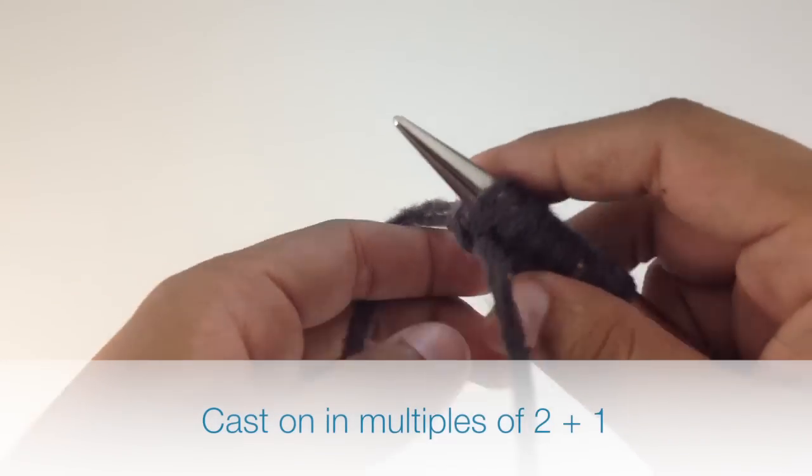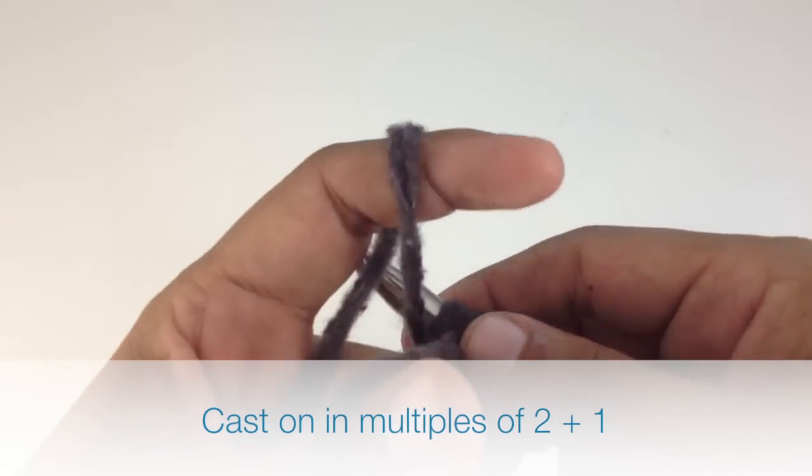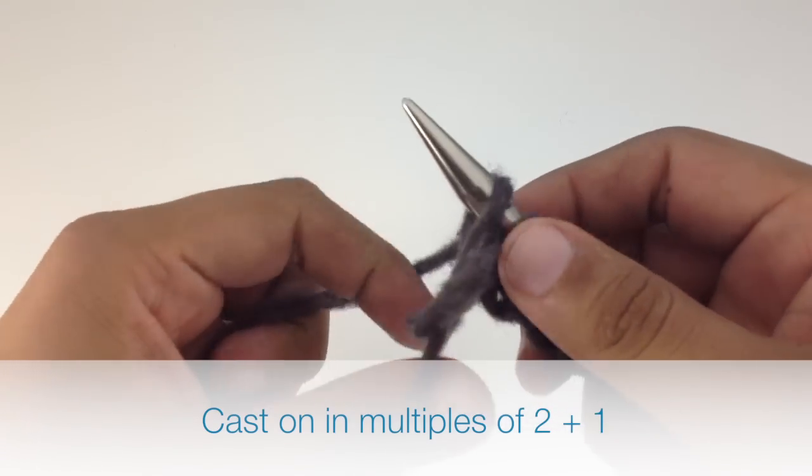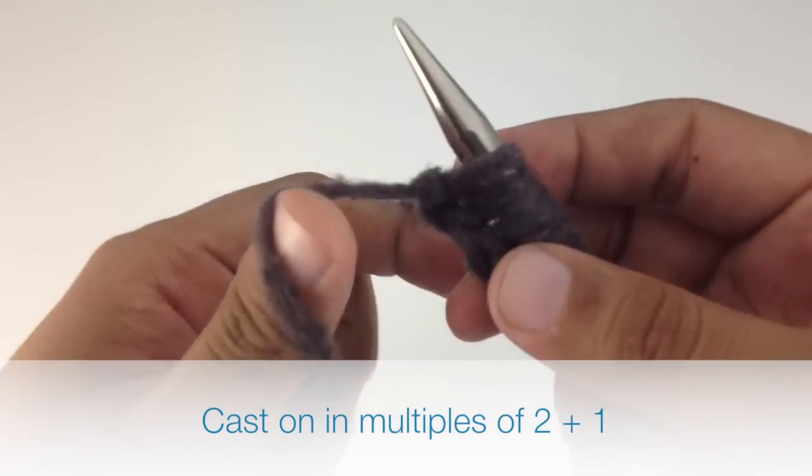To begin this stitch, you must cast on in multiples of 2 plus 1, preferably using a cast on designed for ribbing like the 1x1 rib cast on.